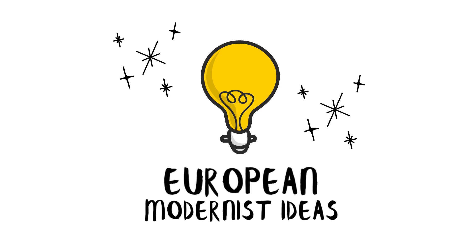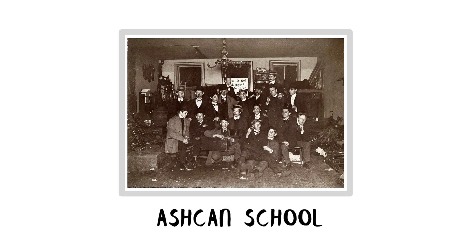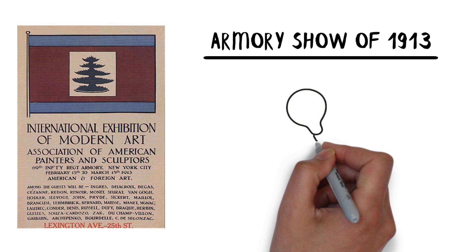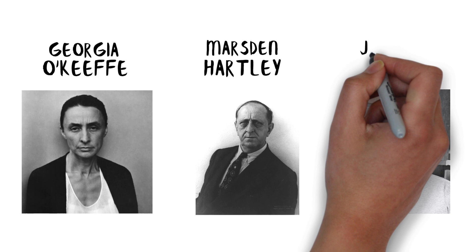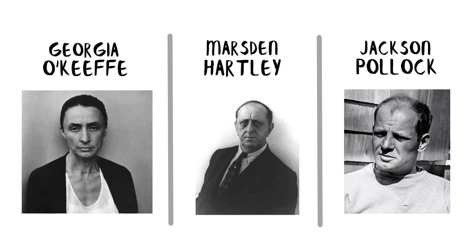The Ashcan School, for example, focused on depicting urban life and social realities. The Armory Show of 1913 introduced European modernism to American audiences and had a significant impact on the development of modern art in the country. Artists like Georgia O'Keeffe, Marsden Hartley, and Jackson Pollock emerged during this period and contributed to the rich and diverse artistic landscape of modern art in the United States.